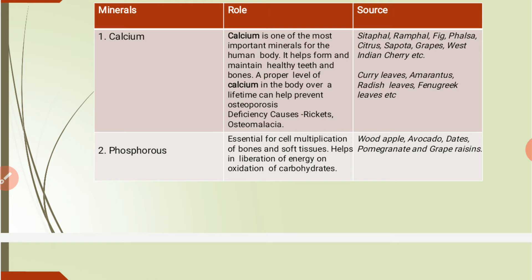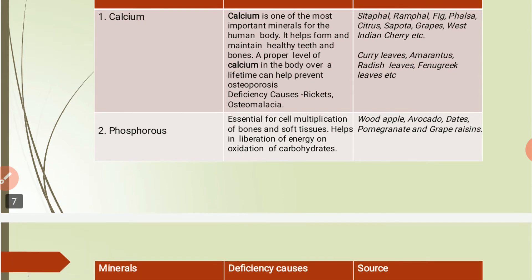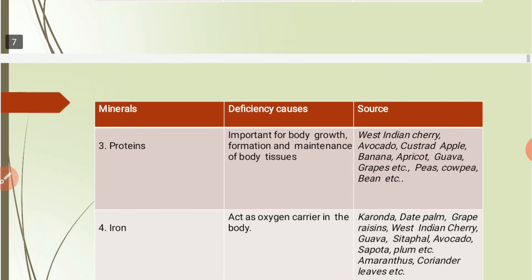Phosphorus is essential for cell multiplication of bones and soft tissues and helps in liberation of energy during oxidation of carbohydrates. Sources of phosphorus include wood apple, avocado, dates, pomegranate, and grape raisins.